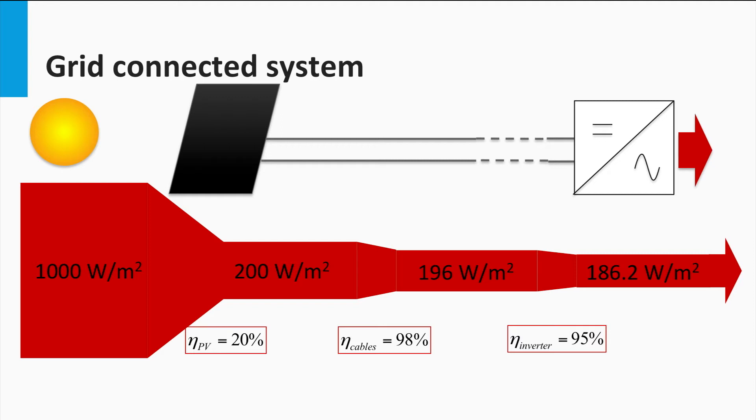Assuming a lossless exchange at the distribution panel and negligible dissipation in the cables carrying AC power, we get an overall PV system output as 186.2 watts per square meter.